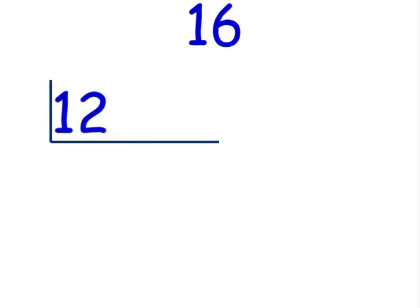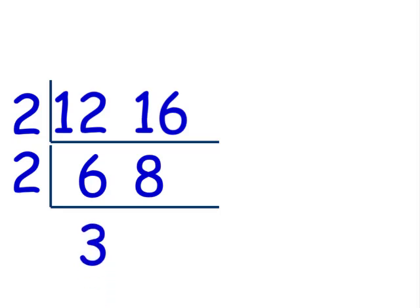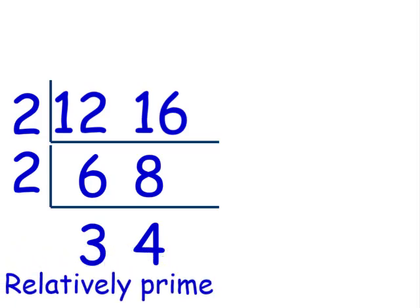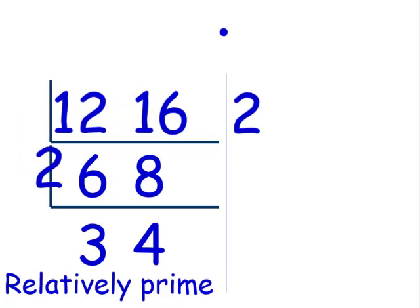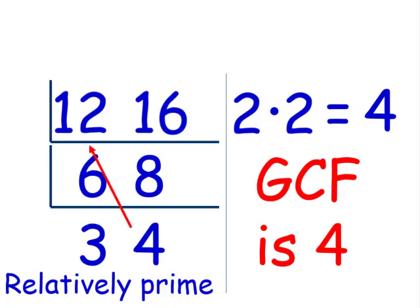Let's find the greatest common factor and the least common multiple of 12 and 16. We'll use an upside-down division symbol, placing 12 and 16. We find a number that divides both evenly — 2. 12 divided by 2 is 6, and 16 divided by 2 is 8. Then 2 divides 6 and 8 again: 6 divided by 2 is 3, and 8 divided by 2 is 4. There is no number besides 1 that divides 3 and 4 — they are relatively prime. To find the GCF, we multiply the two factors: 2 times 2 is 4, so our GCF is 4. To find our LCM, we multiply 4 times 12 or 3 times 16, which is 48. The LCM is 48.